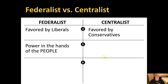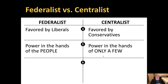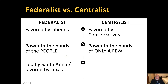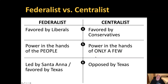Federalists believed that power should be in the hands of the people. Centralists believed power should be in the hands of only a few qualified people to lead — they didn't trust giving the people the opportunity to decide for themselves, feeling the people would make poor choices. The Federalists were led by Santa Anna and were favored by the Texians and Tejanos. Texans opposed the Centralist form of government, viewing it as a dictatorship that took power out of the hands of the people.